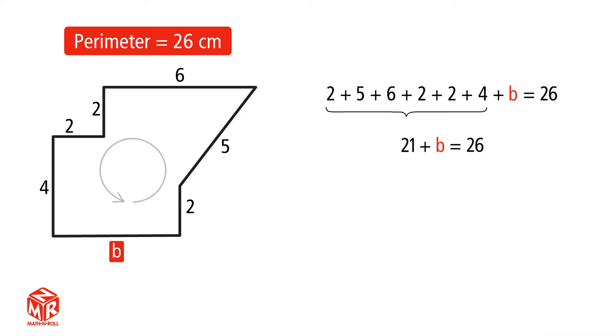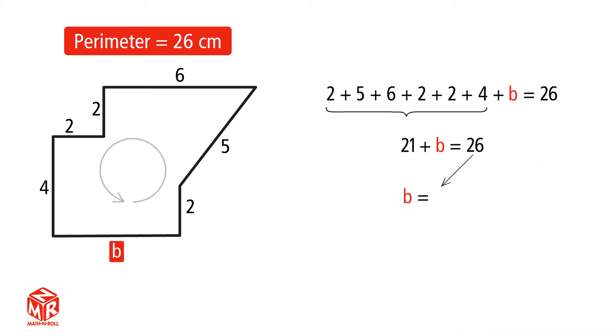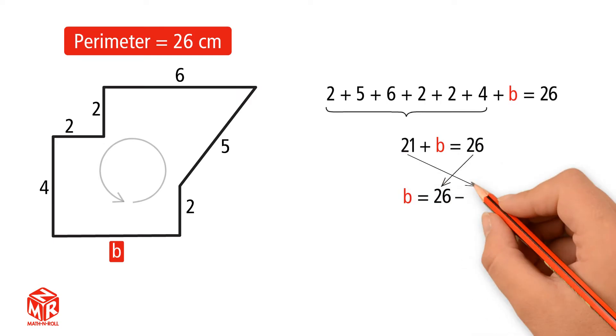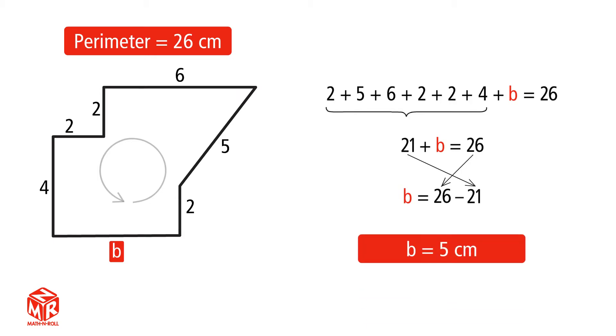How do we find B? Let's take a look at the model. To find B, we have to subtract 21 from 26. So B equals 26 minus 21. B equals 5. The unknown side length is 5 centimeters.